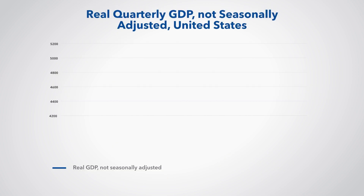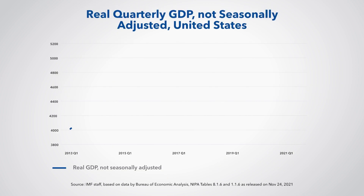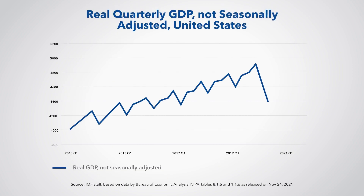We see from the chart that the United States' real GDP without seasonal adjustment shows regular seasonal patterns. Typically, GDP peaks in the fourth quarter, when retail sales are boosted by seasonal gift giving, and declines in the first quarter, when cold weather and winter storms dampen production, especially for outdoor industries such as construction.